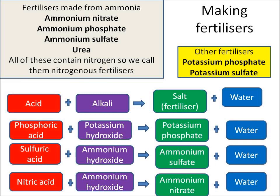We can make all of these fertilisers by reacting an acid together with an alkali to make a salt, which will be the fertiliser, and water. For example, phosphoric acid and potassium hydroxide make potassium phosphate and water. Ammonium hydroxide will react with sulphuric acid to make ammonium sulphate and water, and ammonium hydroxide will react with nitric acid to make ammonium nitrate and water.